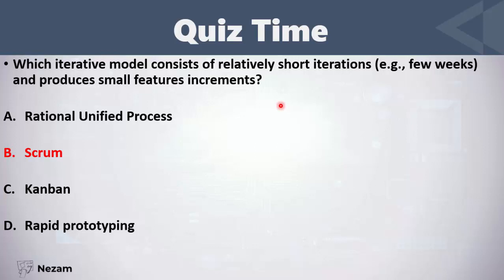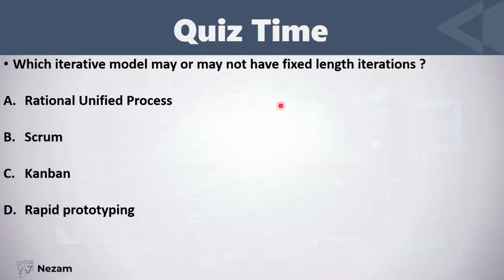In Scrum, we have short iterations. Which iterative model may or may not have fixed-length iterations? Kanban is the iterative model that may or may not have fixed length, and we can deliver the software feature by feature or iteration by iteration.